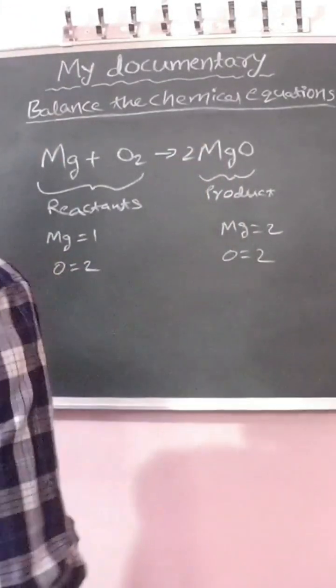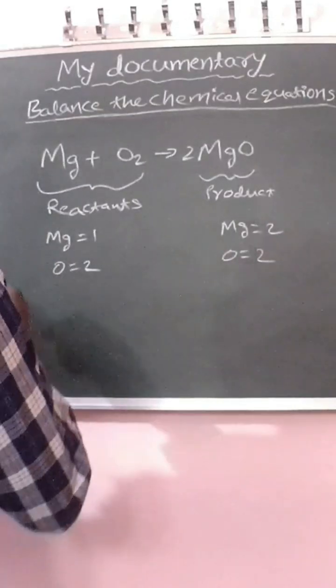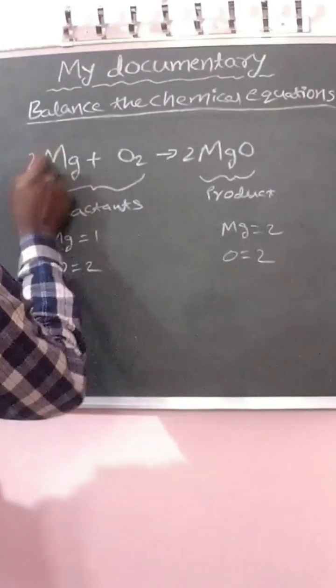Now we need to balance the magnesium atoms. To do this, we need to put a coefficient of 2 in front of Mg.